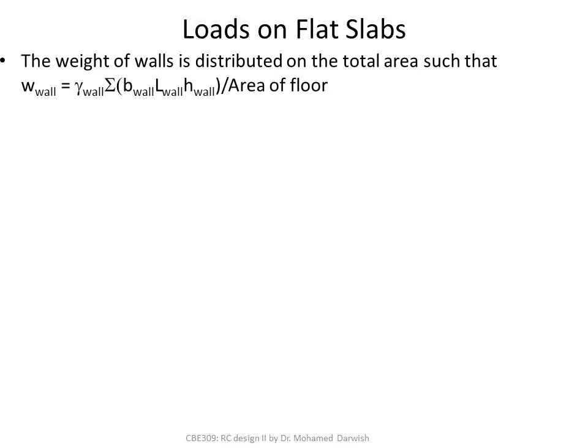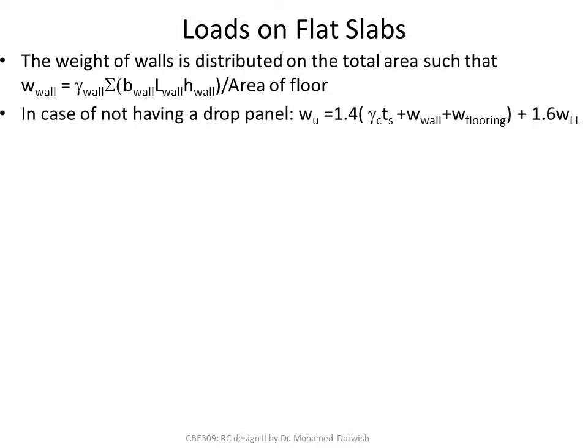Regarding the load on flat slabs: because you don't have beams, walls are directly supported on the slabs. You need to calculate the total weight of the walls over the flat slab and divide by the floor area. Without a drop panel, W_ultimate is simply 1.4 times (γ_concrete × slab thickness + wall load + flooring load) plus 1.6 times the live load. One issue with flat slabs is that loads are very high because the slab itself is thick.